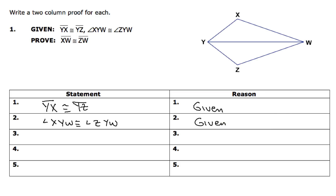Right after I write down my given information, what I'm going to do is mark that on my diagram. So that first one, YX is congruent to YZ — I'm going to mark that on my diagram. The other piece of information that I'm given is angle XYW, which is right here, congruent to angle ZYW, right here. So I want to make sure that I put those marks on my picture.